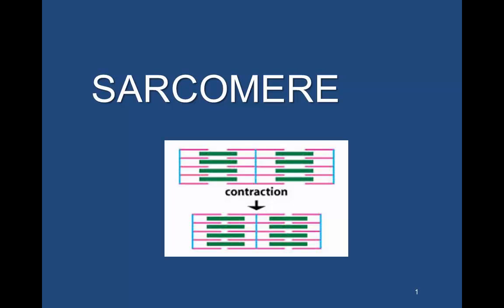One key point of understanding the sarcomere is that it is the basic unit, and how we put those sarcomeres together, or the architecture, will define force production of the muscle. Another way to think about it is that the force produced in a muscle is directly proportional to the number of cross bridges formed.